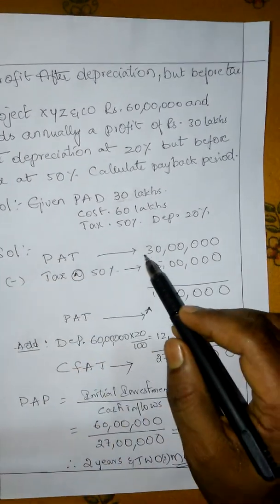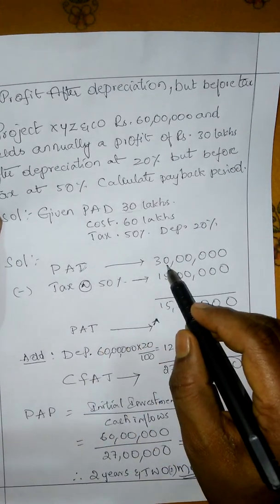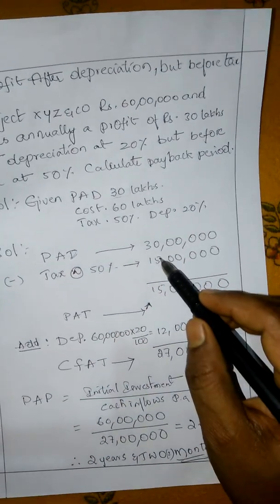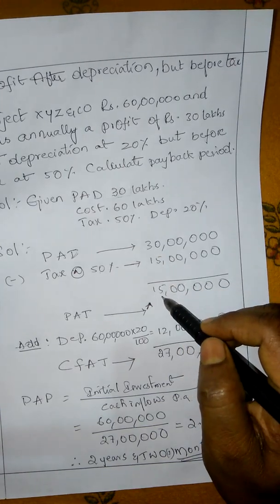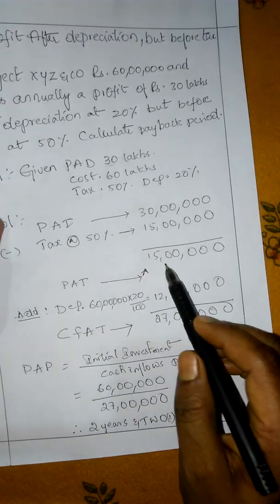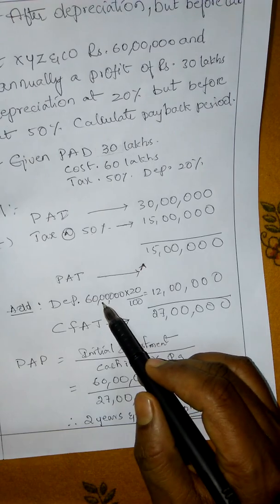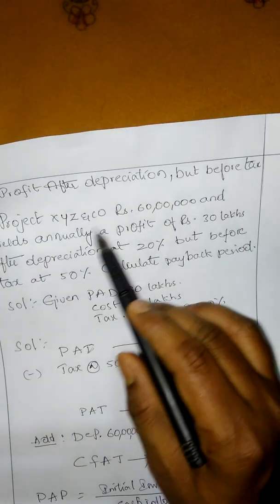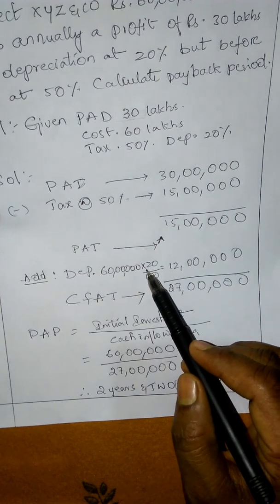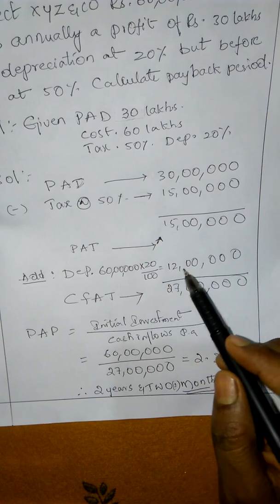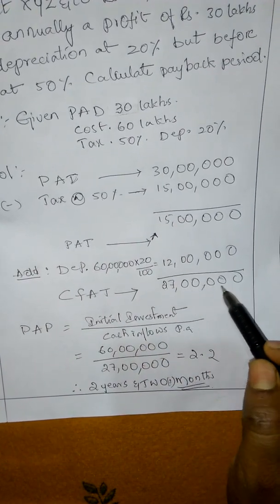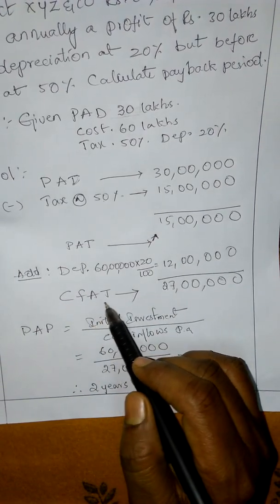Profit after depreciation is 30 lakhs. Minus tax 50% — 30 lakhs × 50% = 15 lakhs. So 30 lakhs minus 15 lakhs = 15 lakhs profit after tax. To this profit after tax, we add depreciation. Depreciation: cost of project 60 lakhs × 20% = 12 lakhs. Adding 12 lakhs to 15 lakhs profit after tax gives 27 lakhs.